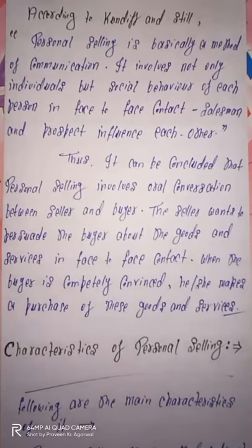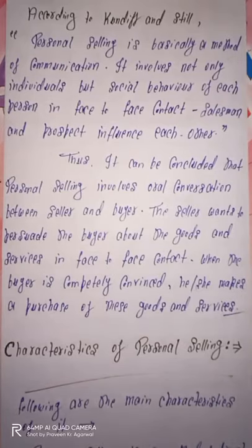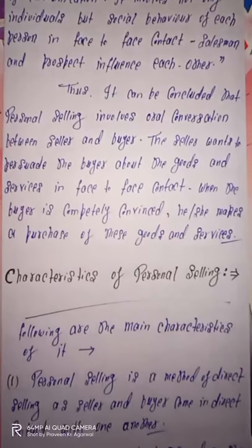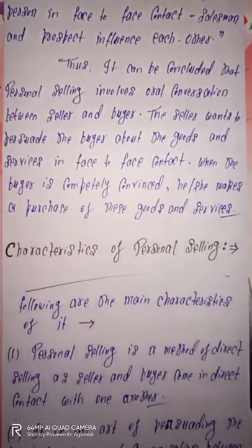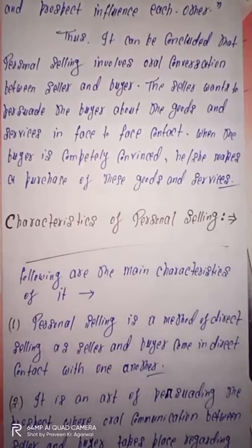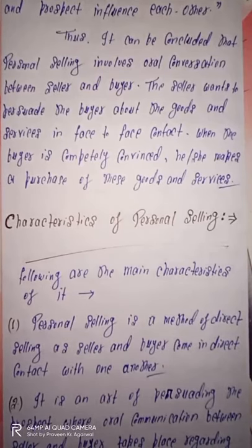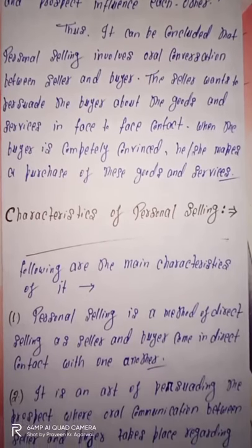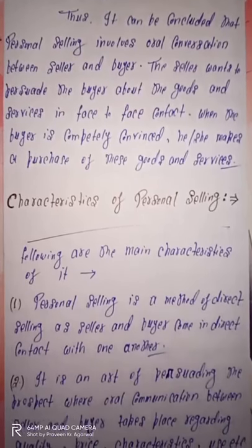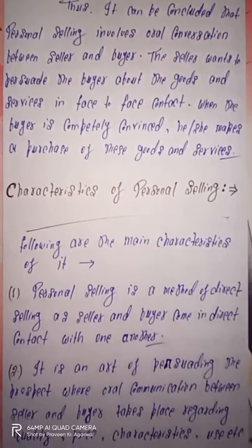Now we will discuss the characteristics or features of personal selling. The very first feature is that personal selling is a method of direct selling, as seller and buyer come in direct contact with one another. Personal selling ek seller aur buyer ke beech mein contact karne ka direct method hai jismein buyer aur seller ek doosre ke contact mein direct way mein aate hain — yah direct selling ko focus karta hai.